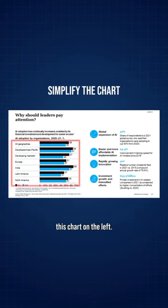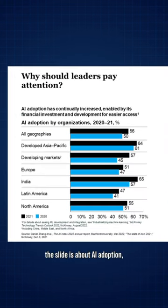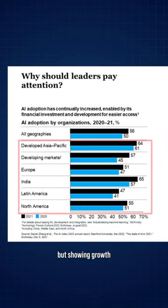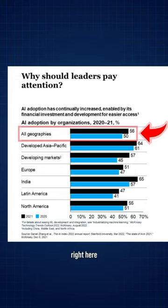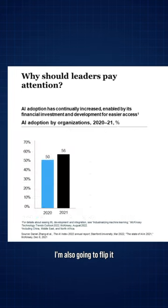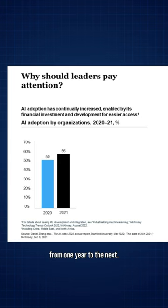Next, I want to simplify this chart on the left. The slide is about AI adoption, but showing growth by region doesn't really add to that message — it just clutters the slide. So I'm going to focus on this part right here to make the message more clear. I'm also going to flip it vertically with 2020 on the left and 2020 on the right to emphasize the change from one year to the next.